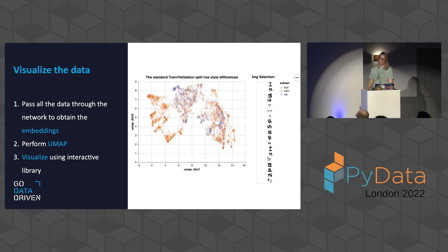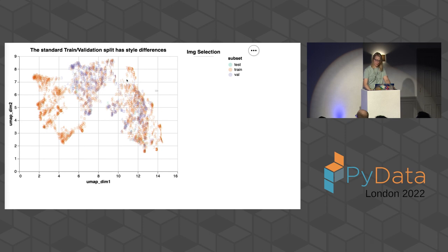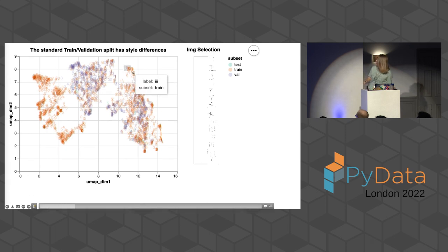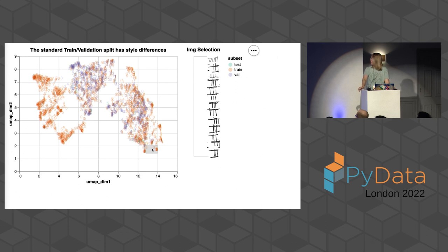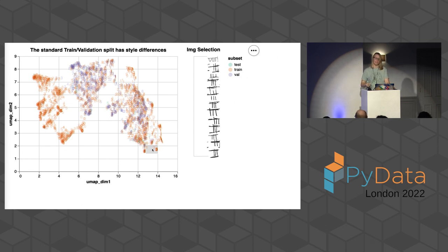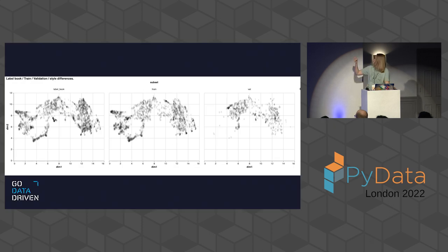We performed UMAP on our embeddings and visualized with Altair, where a tooltip allows us to display specific data points. The data points are colored according to the subset they belong to: train, validation, or label book. The left quadrant of the data appeared heavily in the train set but not in the validation set. Plotting them separately confirmed this: the distribution of data in training and validation sets was not the same. How can we expect a good model if those distributions don't match up?